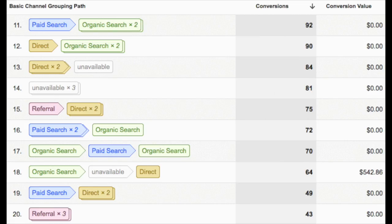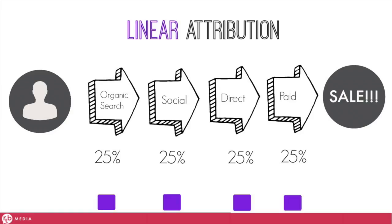In any marketing funnel there are going to be multiple touch points a consumer touches prior to making a conversion. Since Google Analytics gives you visibility into the path they took, a really simplistic approach is the linear path attribution model, which allows you to put equal emphasis on all touch points the consumer used to reach the conversion.